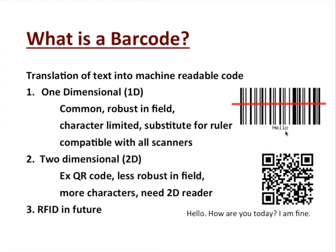Two-dimensional barcodes — like QR codes — are much more information-dense. A 2D barcode can encode several sentences of text versus just a word for 1D. However, they are less robust in the field: mud spatters, scratches, and birds perching on stakes can make them hard to read since the whole image must be read. They require a 2D reader and are great for seed packets kept indoors, but in the field, 1D is the way to go.